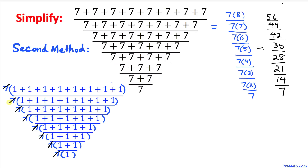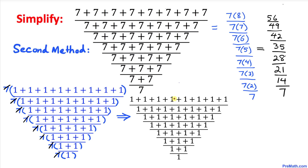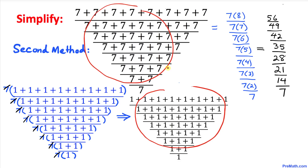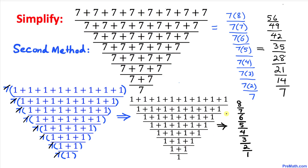This method only works if we have an even number of fractions. After cancellation we are left with just the number ones across the board. So the sevens are completely gone and we are left with the simple fractions: 8 divided by 7 divided by 6 divided by 5 divided by 4 divided by 3 divided by 2 divided by 1. Simplifying these fractions gives us once again 128 over 35.